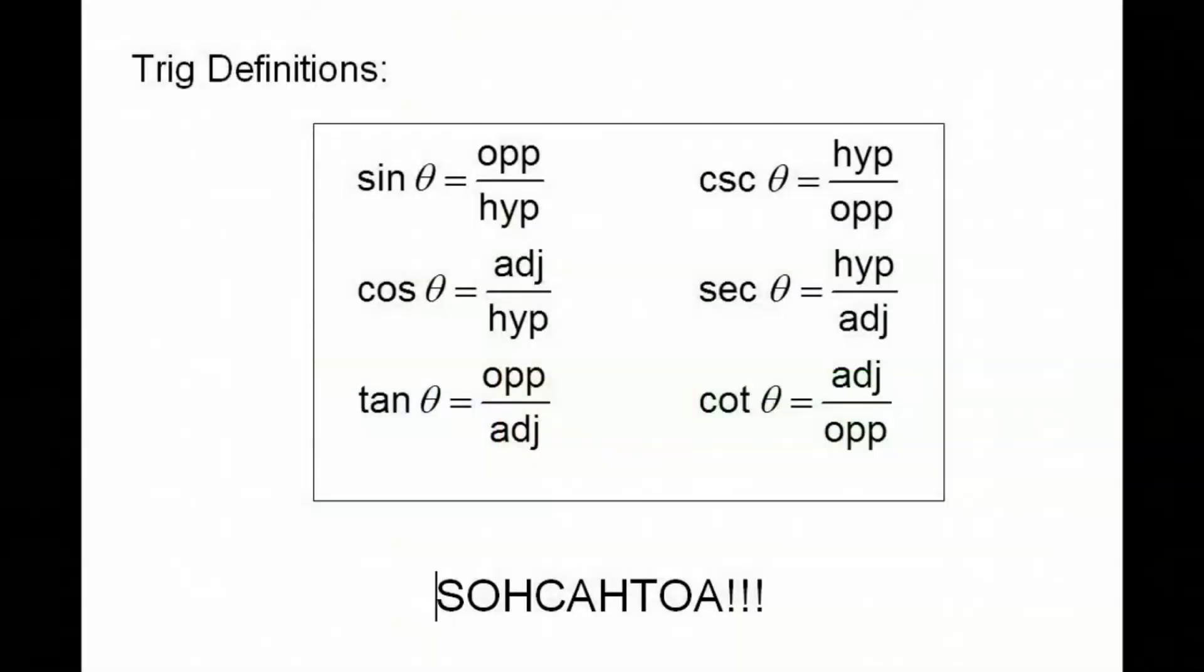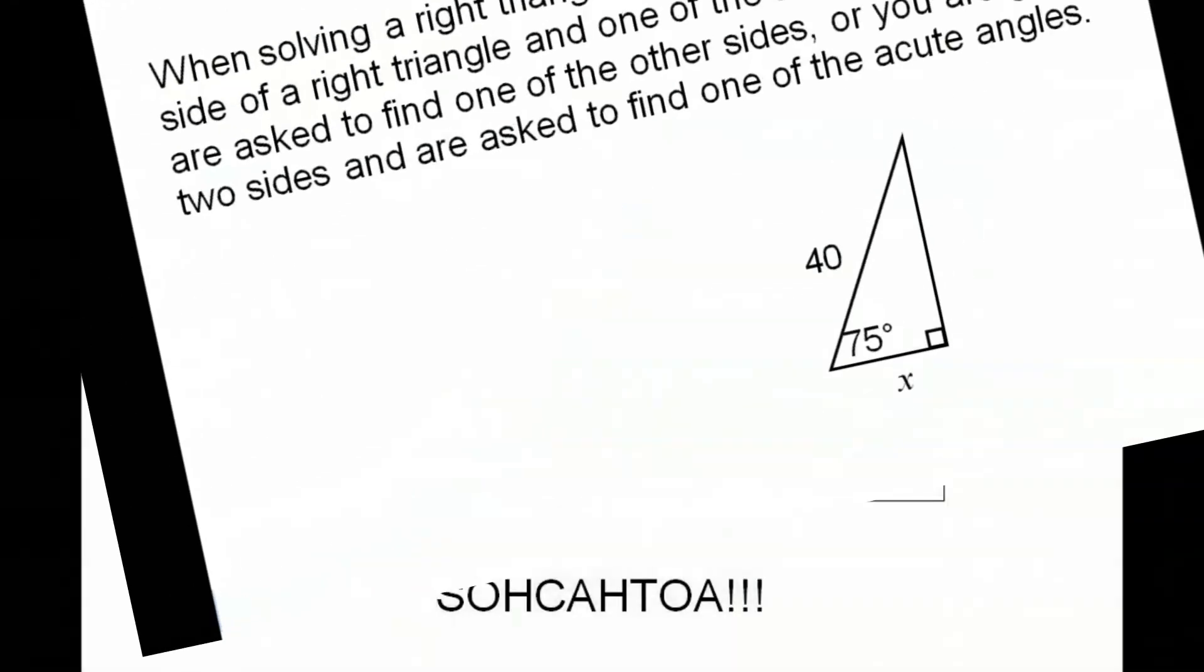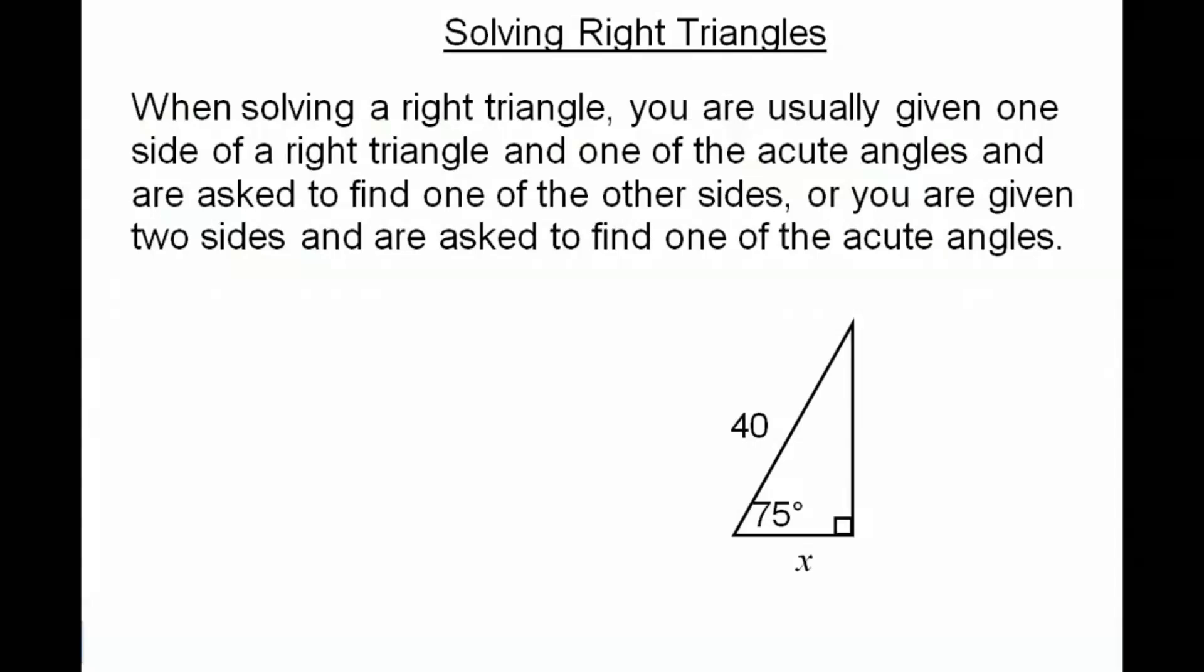Okay, let's look at one of our examples. Here's a problem and this one involves solving right triangles. When solving a right triangle, you're usually given one side of a right triangle and one of the acute angles and are asked to find one of the other sides, or you might be given two sides and asked to find one of the acute angles.